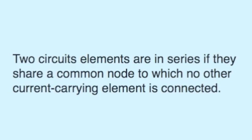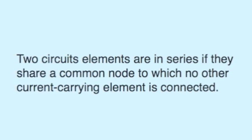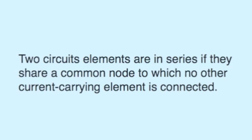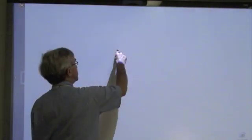Let's start by saying what we mean by two circuit elements being in series. Two circuit elements are in series if they share a common node to which no other current carrying element is connected.